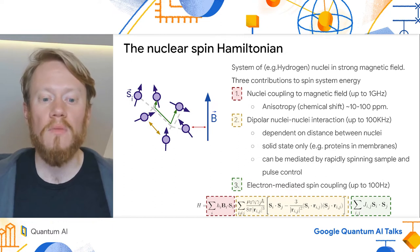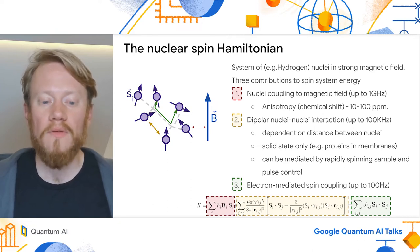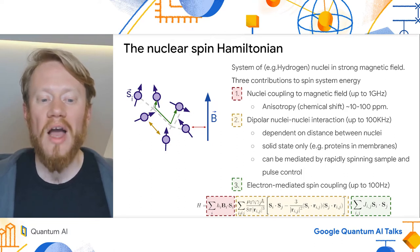All three terms depend on system details: the shielding of individual spins, their spatial position, and the surrounding electronic structure respectively. Depending on the system and the experiment, the relative term strength can vary by multiple orders of magnitude, which gives us a very wide area to look for classically intractable systems.